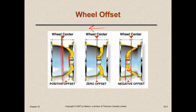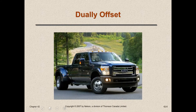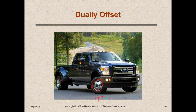Zero offset is straight down the middle. A good example of this is a dually truck. The front wheels stick out — when it sticks out, that's positive offset. The back wheels disappear inward — that's negative offset.